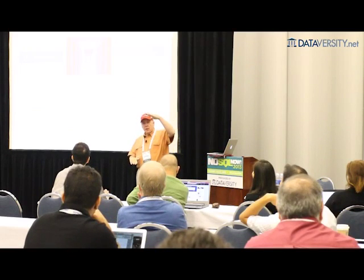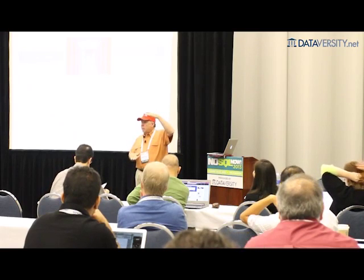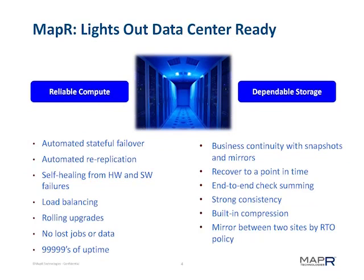MapR runs faster on less hardware, and the scaling factors get bigger and bigger the more overhead there is in ordinary Hadoop distributions. That overhead can come from scale or from applications. The advantage that MapR has expands from roughly 2x to about 7x in terms of hardware-to-hardware speed advantages. At the same time, MapR has a history of providing lights-out features like snapshots and transactionally correct updates.